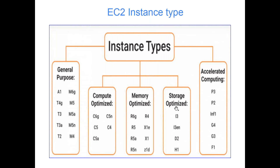The next category is Storage Optimized, where processing is not that important — you may not be interested in processing the data but just reading and writing it. For example, downloading data from S3 and putting it onto your server, or reading from there and putting it somewhere else. Where storage, read and write operations are more required but processing is not, you can go with Storage Optimized.